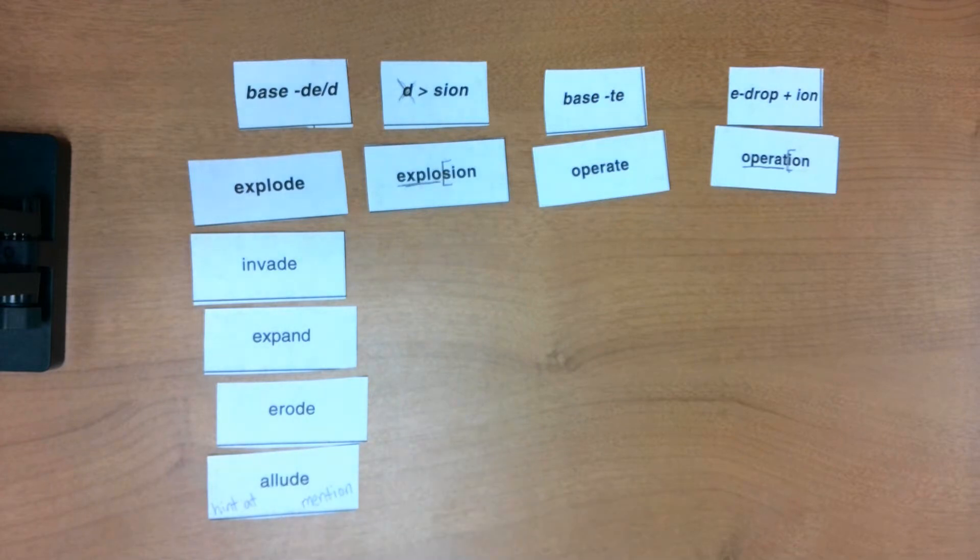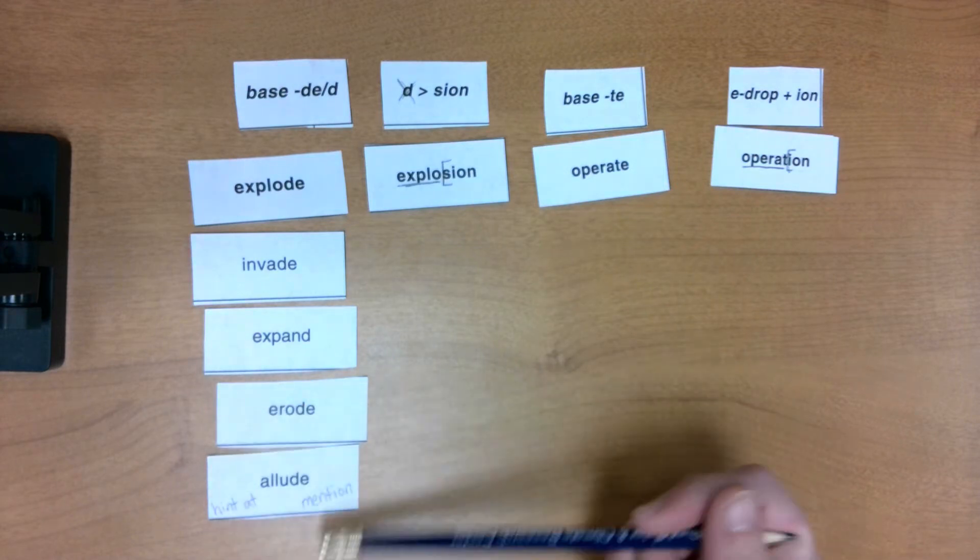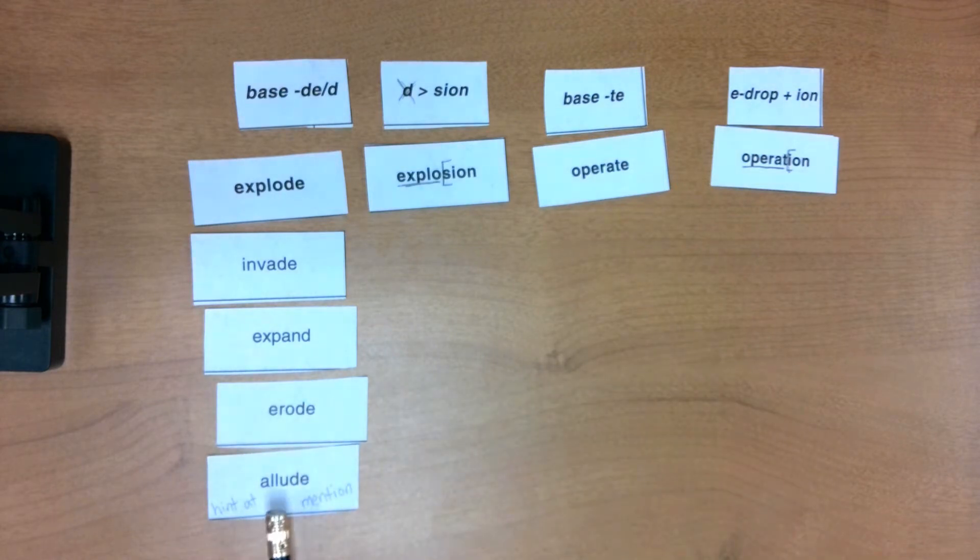Now this word is allude and it really means to hint at or mention. And so you can allude to something by hinting at it or mentioning it and not going in deep length. So that's what that word allude means and I wrote the words hint at or mention because that one's hard for me and it helps me to remember that.